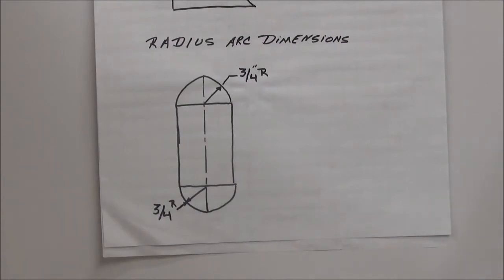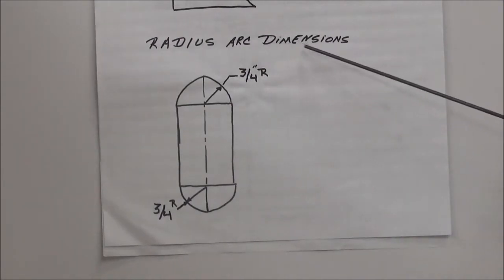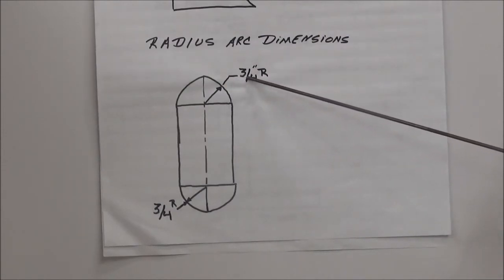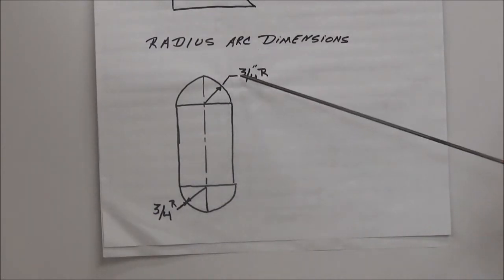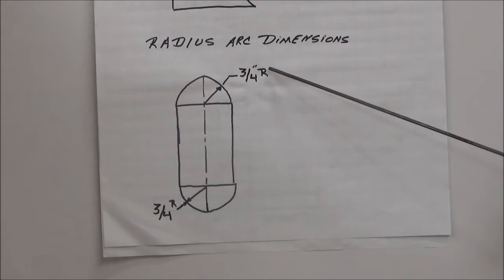So let's take a look here and we're going to talk a little bit about a radius arc and dimension. All right ladies and gentlemen, radius arc dimensions, generally these are going to be in whole numbers like an inch and three quarters, something of that nature. In this case I've used three quarters of an inch radius.